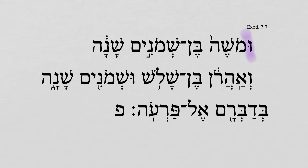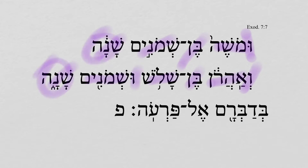We have a disjunctive Vav here on the beginning of Moses — now Moses. So this is a break from the previous context. Now Moses was a son of 80 years, and Aaron a son of 83 years. The word 'year' is just a collective, so we would say 'years' for both of these.